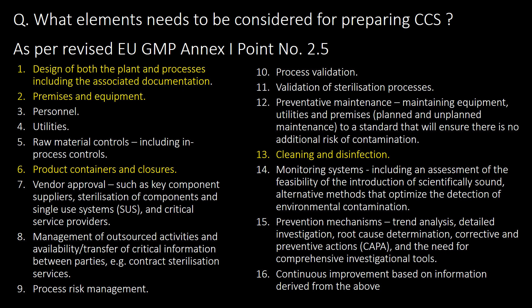What elements need to be considered when preparing a contamination control strategy as per revised UGMP Annex 1 point 2.5? Sixteen elements need to be considered. These majorly include design of both the plant and processes including associated documentation, premises and equipment, product containers and closures, and cleaning and disinfection procedures.